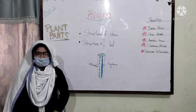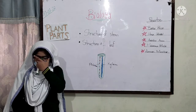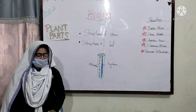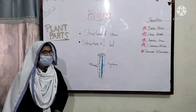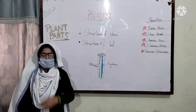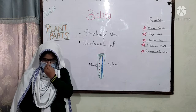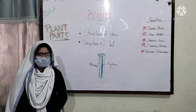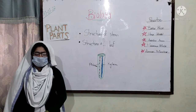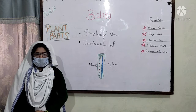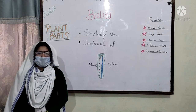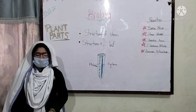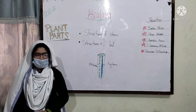Leaves are the food factories of plants. The upper layer of leaves has a vascular cuticle to reduce water loss. The lower layer of leaves has stomata. Exchange of gases and transpiration takes place in the stomata.